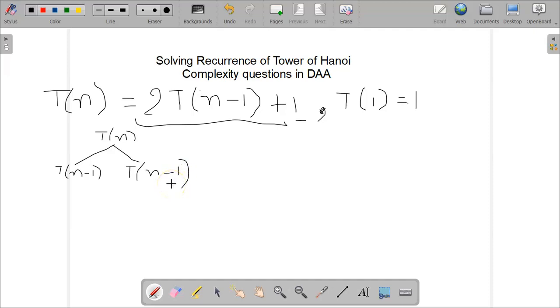What is the effort of the T(n) operation? It is 1. So we will put 1 here, and these are the 2 branches that are getting generated.